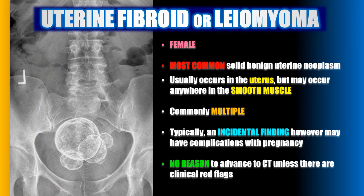Uterine fibroids or leiomyomas are found in females — they're the most common solid benign uterine neoplasm. They usually occur in the uterus but can occur anywhere that has smooth muscle, and when they do occur they're usually multiple rather than solitary. While they may look alarming, typically the radiographic finding is incidental, unless the patient is younger and trying to get pregnant. Advanced imaging such as CT is generally not needed unless there are clinical red flags.